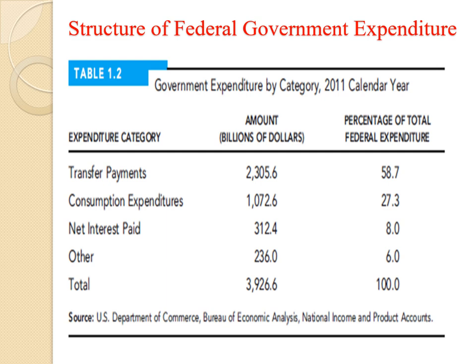The third item is net interest paid, at 8%. The USA has a low interest rate because it has low external debt. All percentages in the last column sum to 100%, showing the priorities and importance of each item in total federal expenditures.